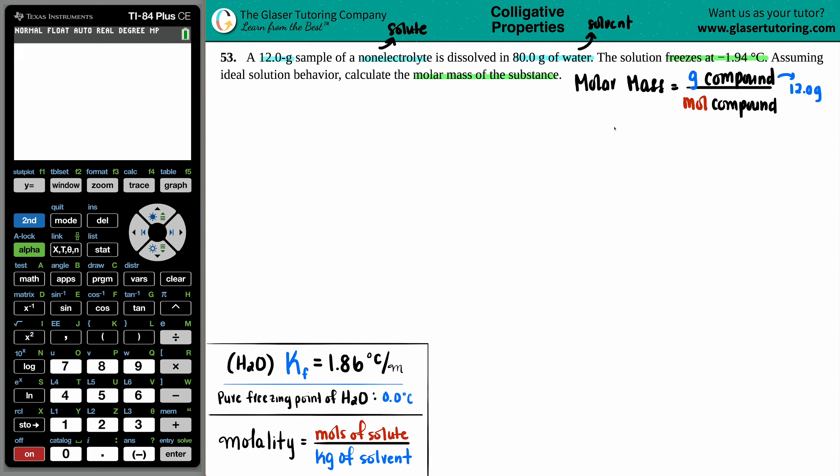So we're dealing with solutions. We've got solute, solvents. We're talking about freezing points. So there's generally only one formula that comes to mind when we're dealing with freezing points with solutions. And that's this formula right here.